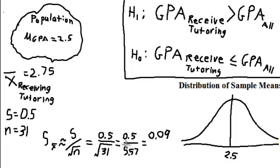So, 0.5 divided by the square root of 31, that's equal to 0.5 divided by 5.57, which is equal to, if we round to the hundredths place, 0.09.